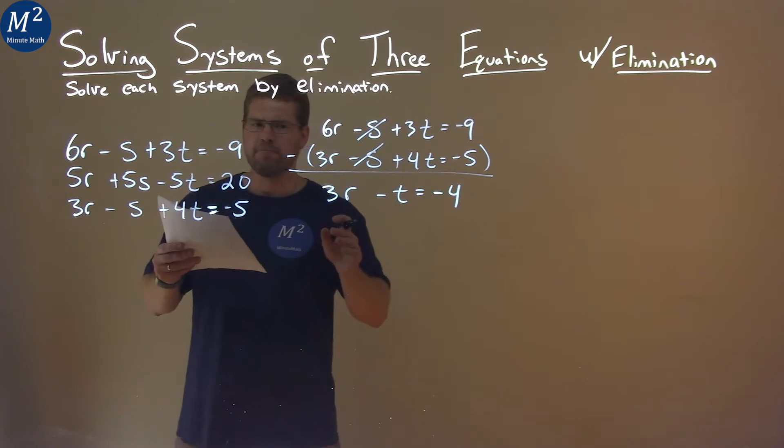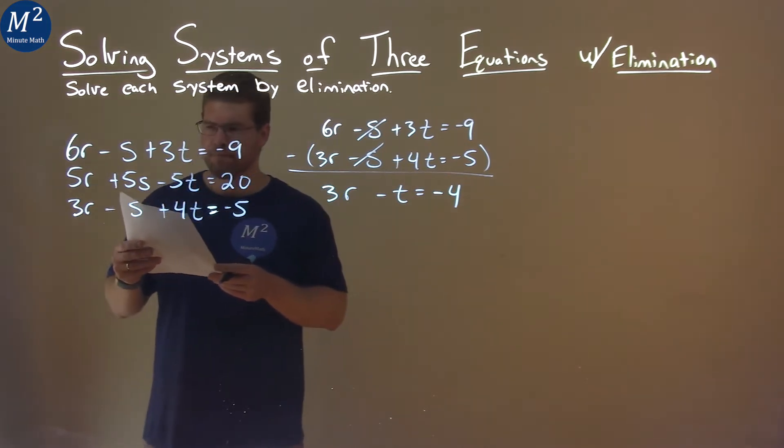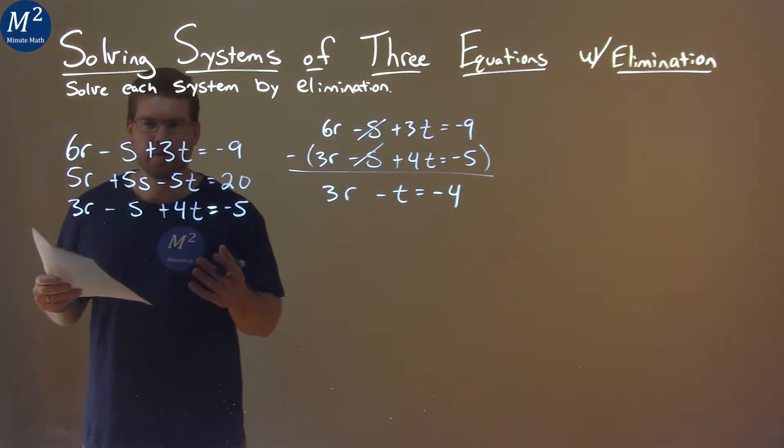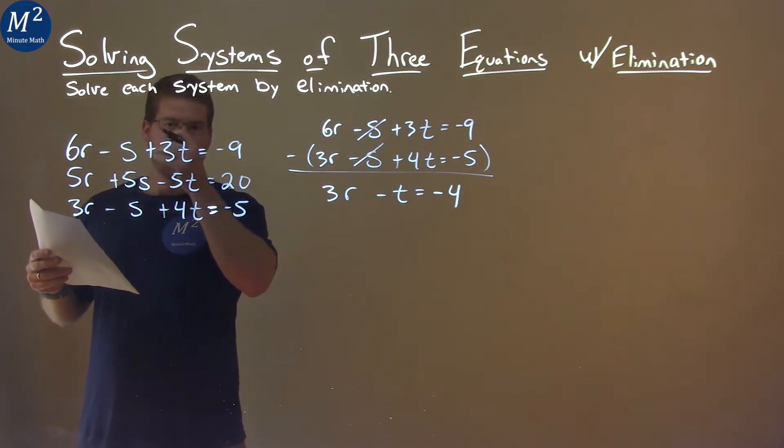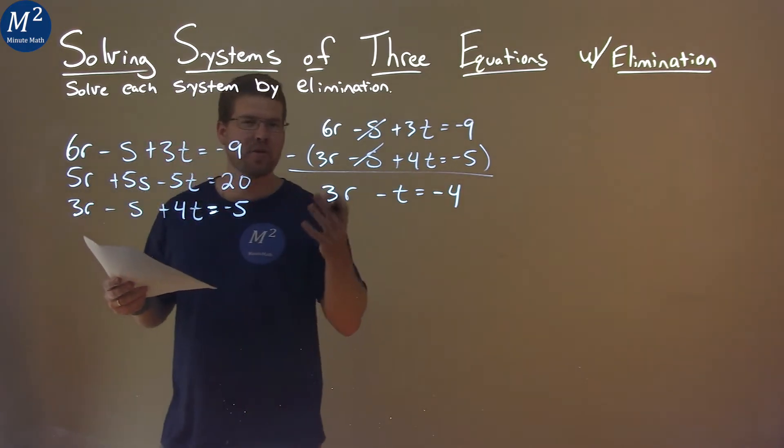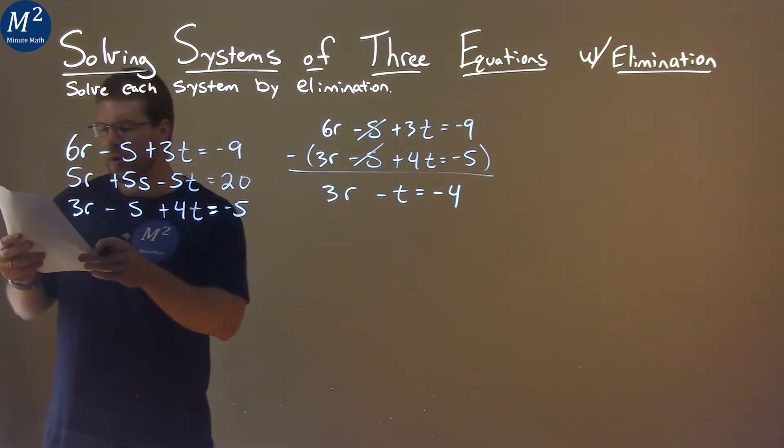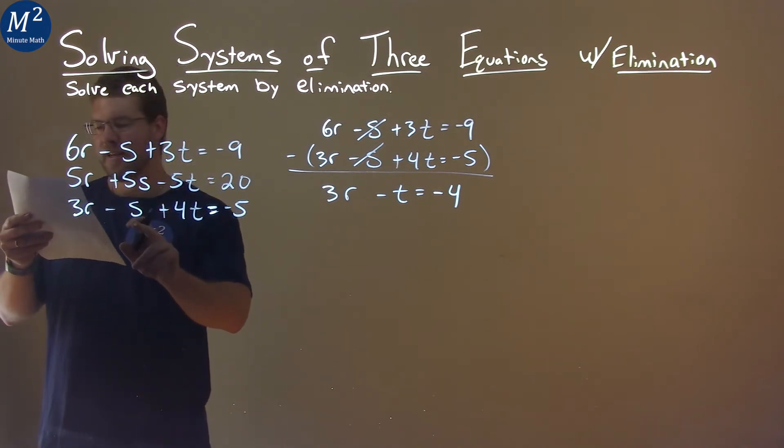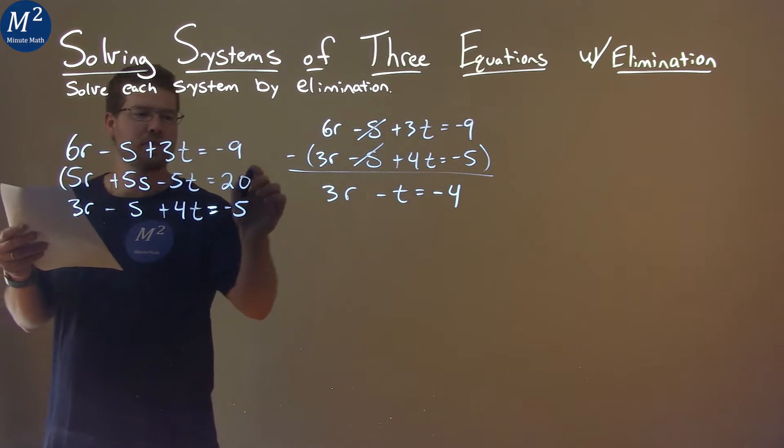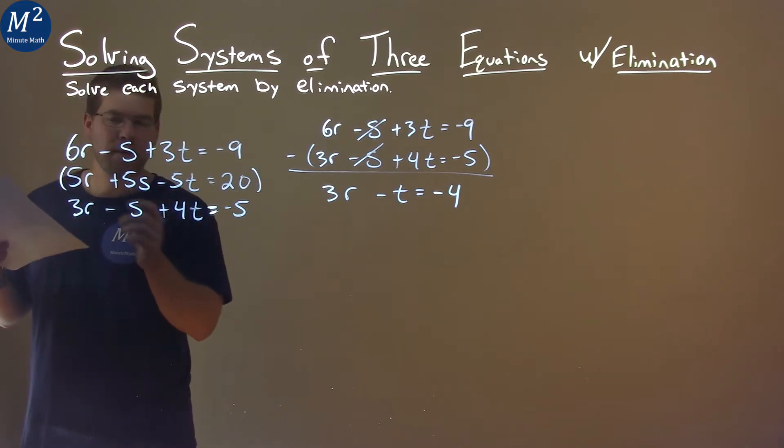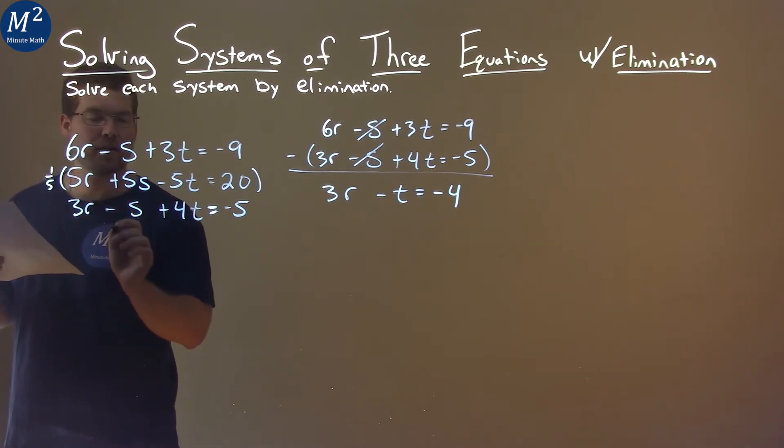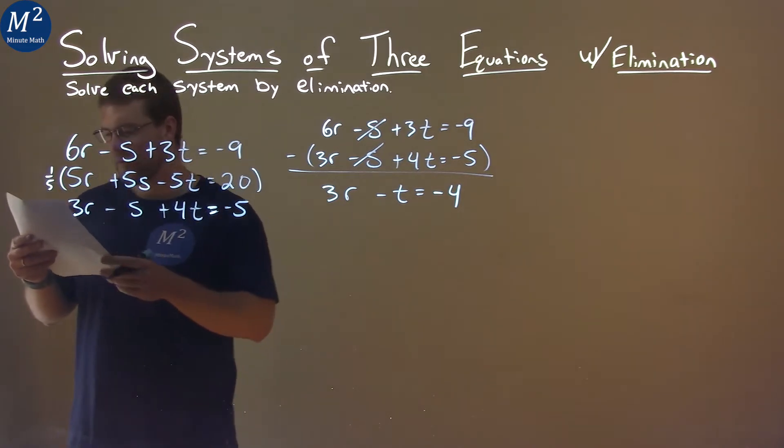We've got to find another equation here. A lot of times we multiply something to cancel out, but we also can divide. And if we notice, we have 5s here and a single s right here. This second equation, if we divide by 5 or multiply by like a 1 fifth, a lot cancels out.